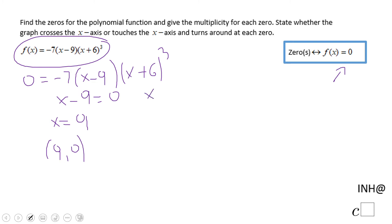And X plus six equals zero is going to give us X equals negative six, which is going to give us an X intercept of negative six and zero.